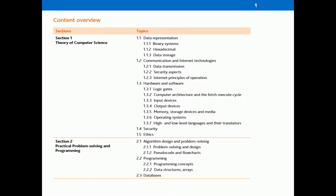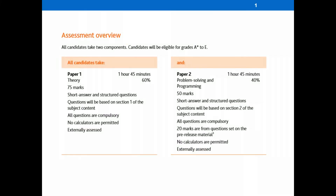That all is included in Paper 1. In Paper 2, we start with pseudocode, and after that we take one programming language — either Python or Visual Basic. Regarding weightage: Paper 1 is the theory paper with total marks of 75 and a weightage of 60%. Paper 2 is the programming paper with total marks of 50 and a weightage of 40%.